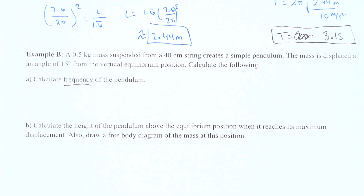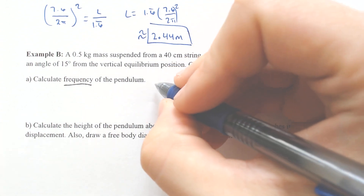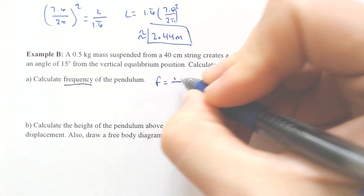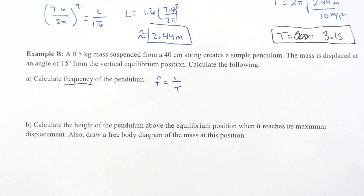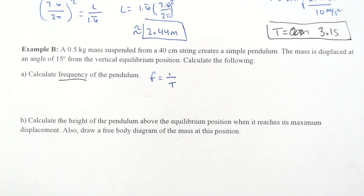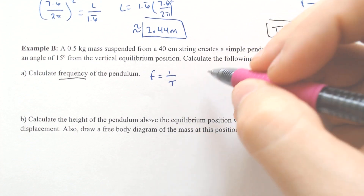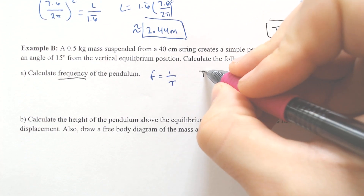First up: frequency. Frequency, for those of you that do not know, is one divided by the period — it is how many cycles it will complete in one second. We can start by finding the period.